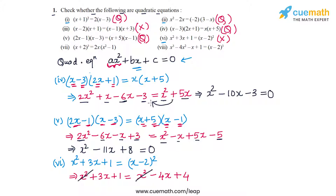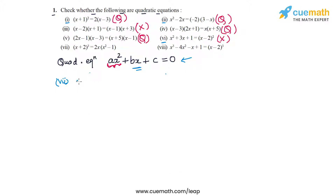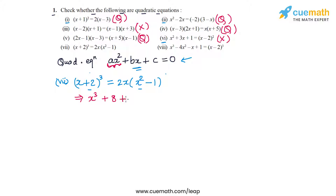In part seven, the equation is (x + 2)³ = 2x(x² − 1). We expand the cube on the left using the identity (a + b)³ = a³ + b³ + 3ab(a + b), giving x³ + 8 + 6x(x + 2). On the right side: 2x · x² = 2x³, and 2x · (−1) = −2x. We can see that the x³ terms are not fully cancelling out.